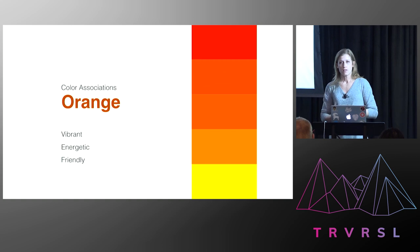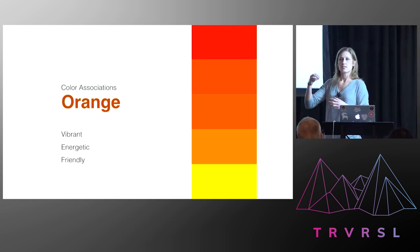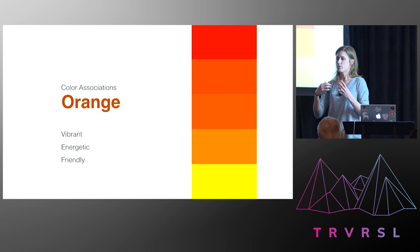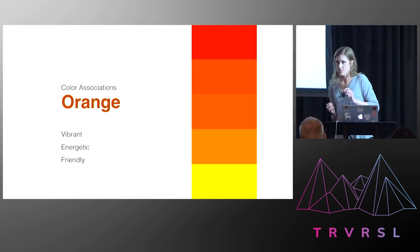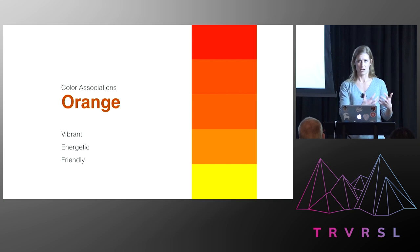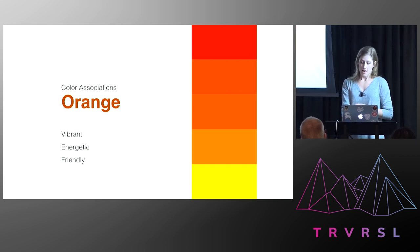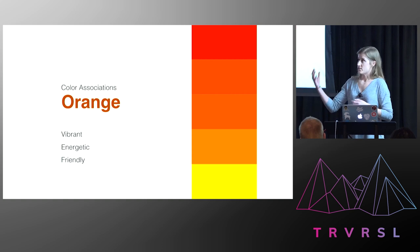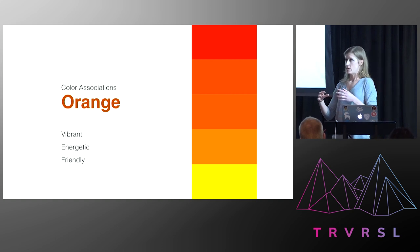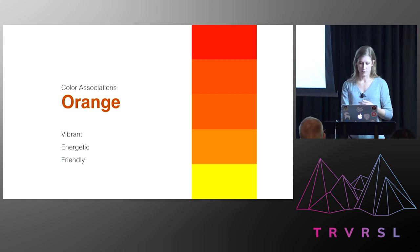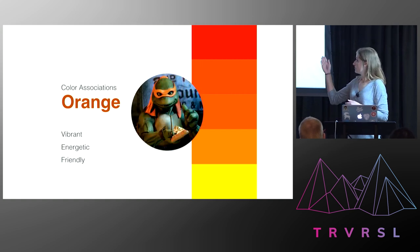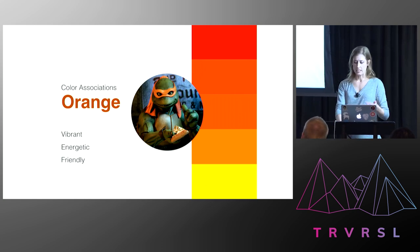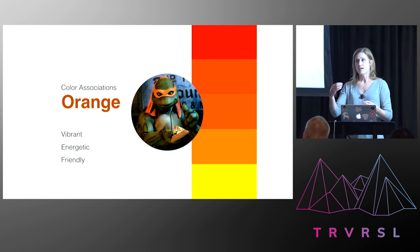Then we have the color orange. Orange is also in the warm color group, but it skews more on the positive, playful side of reddish colors. Whereas red can be very passionate, orange tends to be much more positive and energetic — you'll see it a lot in children's books. We have Michelangelo, who is the goofy one: very playful, very silly, very goofy, and the really outgoing, friendly one in the group. He's very tied to the association we have with orange.